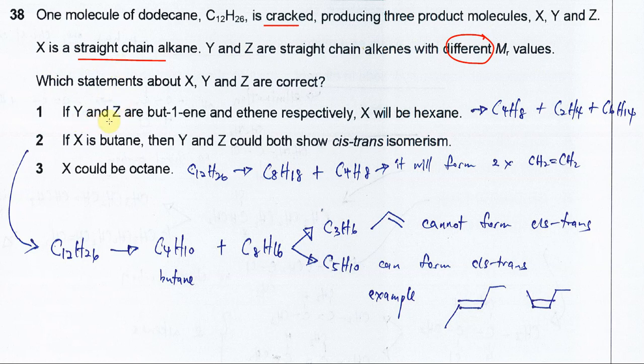If Y and Z are but-1-ene and ethene, X will be hexane. We have to make sure after adding all the hydrocarbons, the carbon number must be 12 and hydrogen number must be 26. Since Y and Z are but-1-ene and ethene, X will be hexane. After using C12H26 minus these parts, you get C6H14. The first statement is correct.